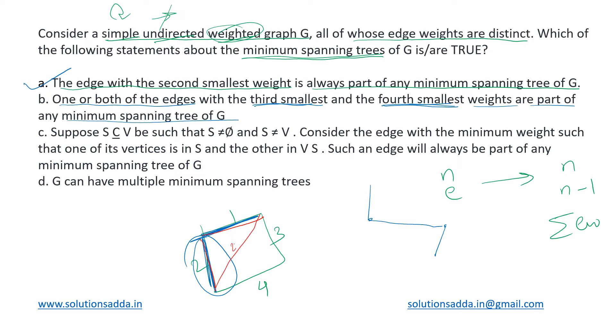It is possible that let us say there was an edge like this whose weight was let us say 2.5, so this is the third smallest. If we add this edge to our MST, it will definitely form a cycle. So we will exclude that and then include this fourth smallest. So basically, we will definitely be including at least one of third smallest and the fourth smallest.